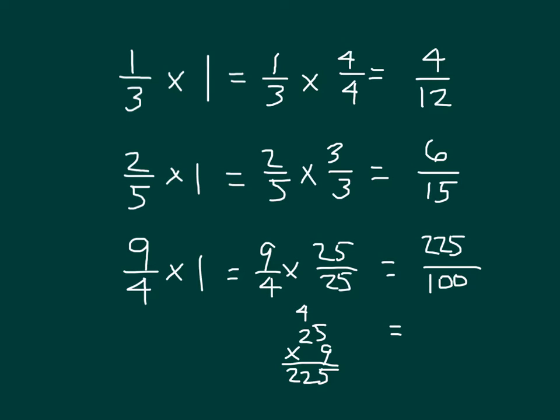So 200 hundredths is equal to 2. So 225 over 100 is equal to 2.25. And so that 9 fourths does equal 2.25. That's a decimal equivalent.